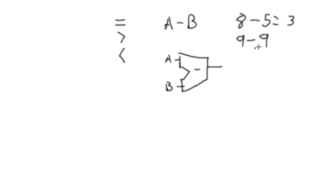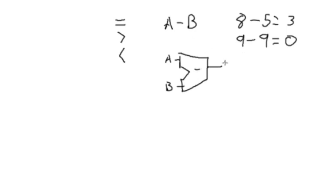Well, they're equal to each other, and if you perform the subtraction, the result is 0. In fact, if A equals B, the result is always going to be 0. So testing for a zero output on our subtractor circuit is going to tell us if A and B are equal.